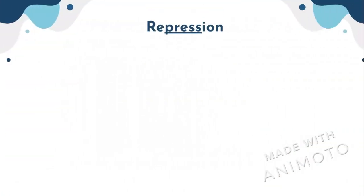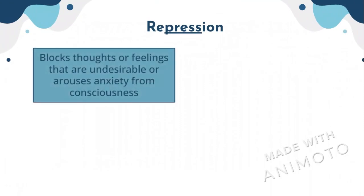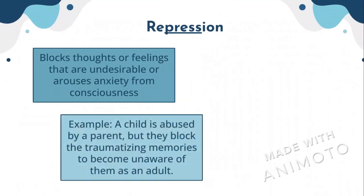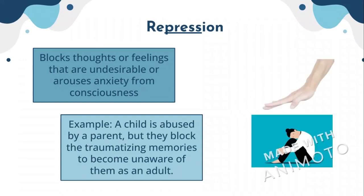The first defense mechanism we will be learning about is repression. Repression is when a person blocks thoughts or feelings that are undesirable or that arouse anxiety from their consciousness. An example of repression is when a child is abused by a parent, but they block the traumatizing memories to become unaware of them as an adult. However, they still feel anger when they see their parent, but they don't know why they're angry.